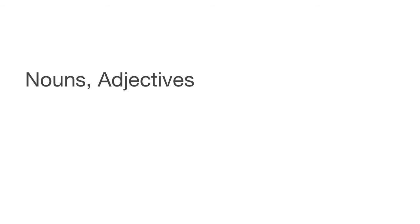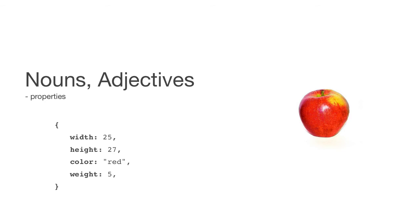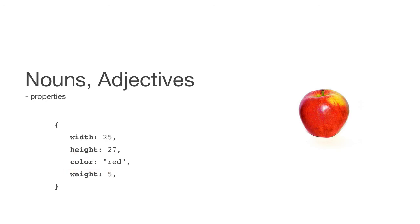Nouns are descriptive. Take a look around you — you live in an object-oriented world, and each object has its own properties, or nouns, which describe the object. Take an apple, for example. We have nouns such as width, height, color, and weight. But they're not good enough to describe the entire object on their own. You also need the adjectives, such as the string 'red'. When we combine the adjective 'red' with the noun 'color', we know we have a red apple. These key-value pairs, or nouns and adjectives, are called properties.